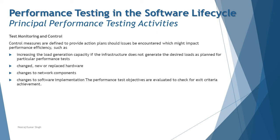The next activity in the fundamental test process is test monitoring and control. Monitoring performance test activities is equally important — you identify the necessary metrics to track progress, and define initial control actions to meet the expectations and objectives of the performance test. Control measures provide action plans when issues are encountered that might impact performance efficiency.